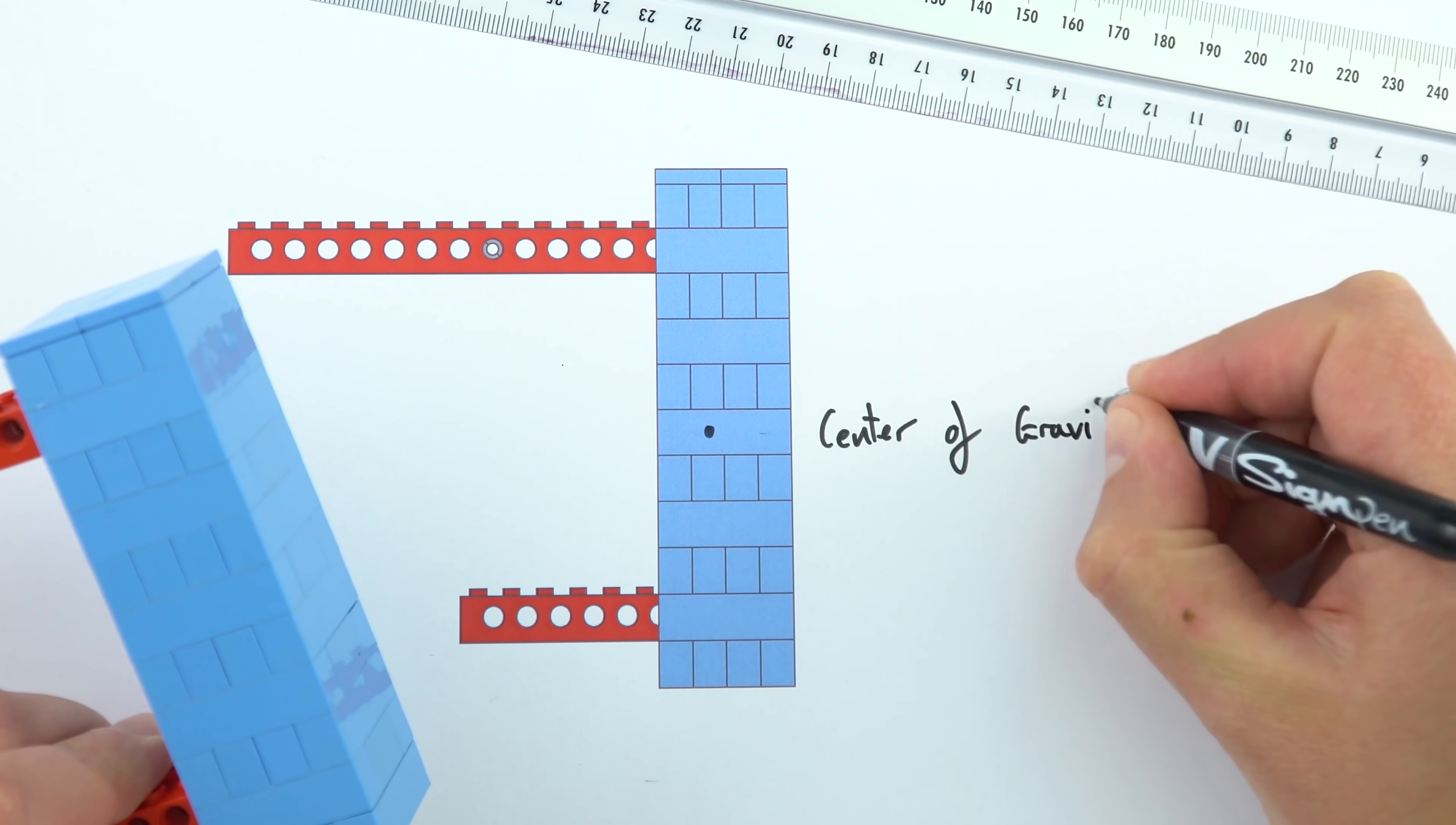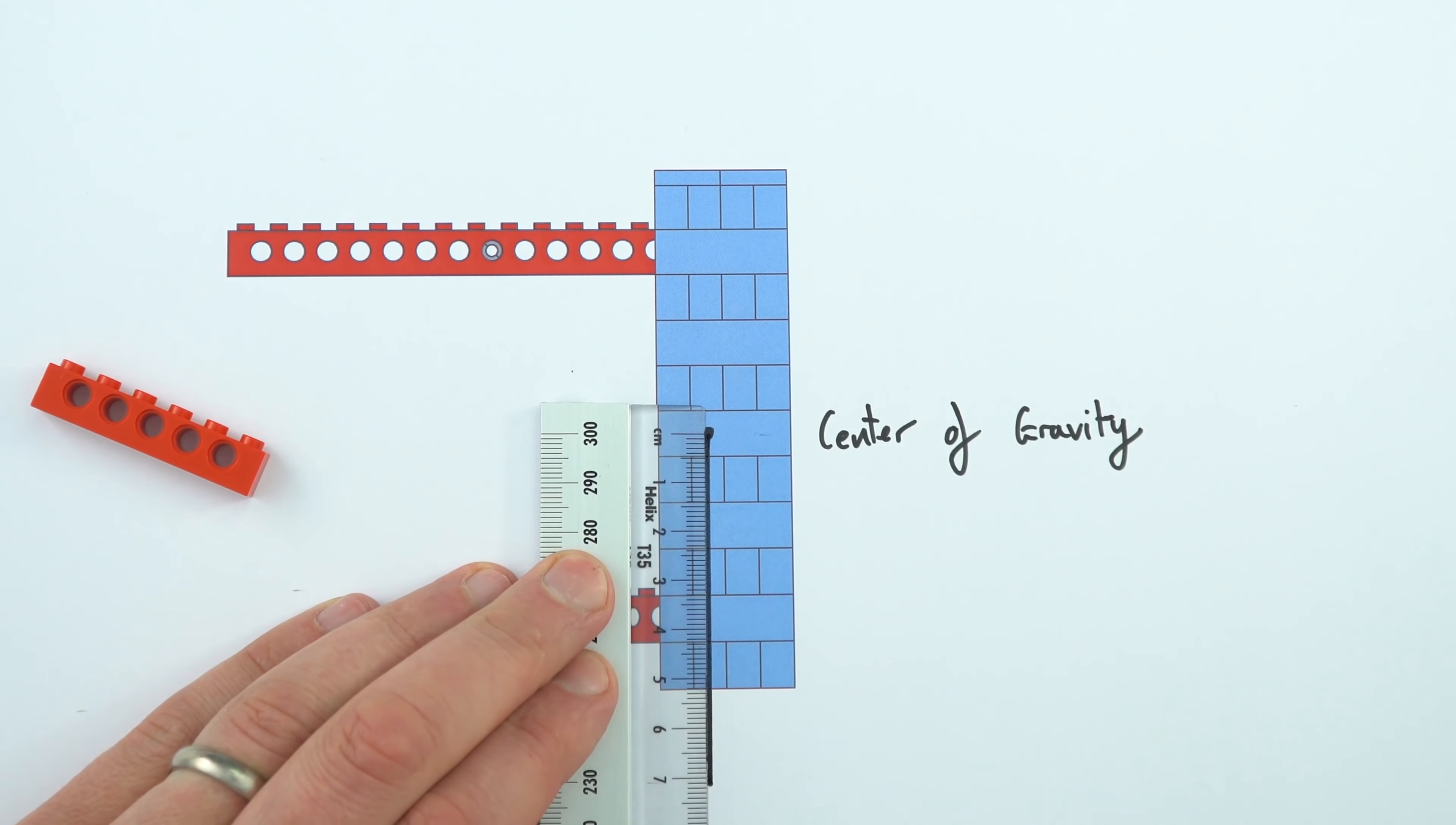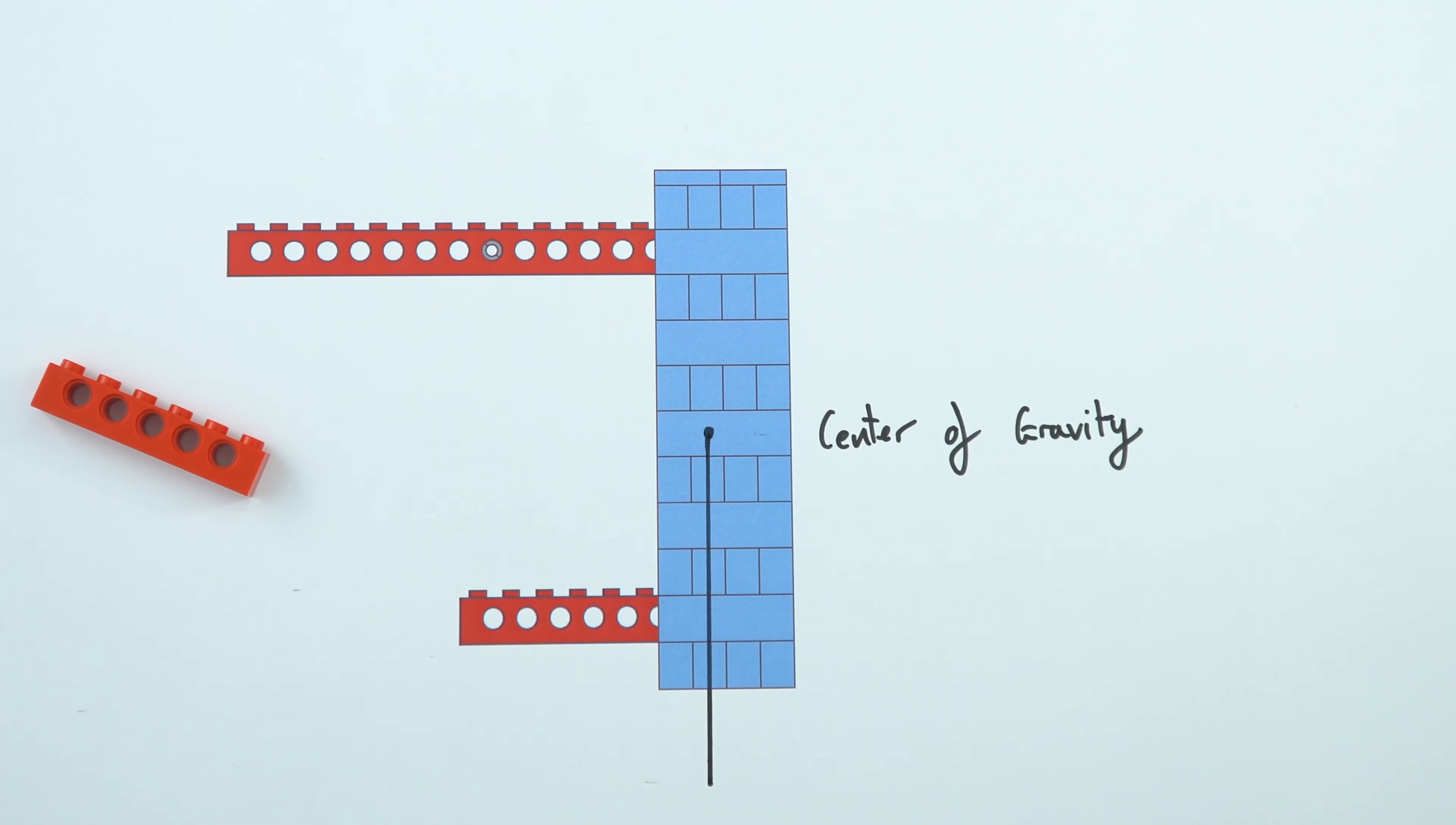And from the center of gravity I'm going to draw an arrow downwards which represents the weight of that object, which is the force that it experiences due to the fact it's in the gravitational field of the earth.